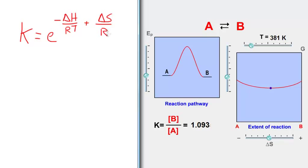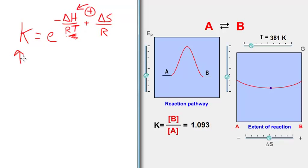There are some important things to remember when looking at this equation. The sign on delta H gives us an indication of how the equilibrium constant will change with changes in T. Essentially, if this value is positive for an endothermic process, increasing T will decrease the weight of this component in the exponent, which will cause K to go up. So for endothermic processes, K tends to increase in general with an increase in temperature.